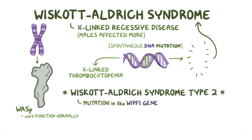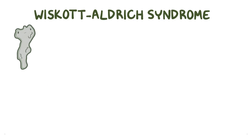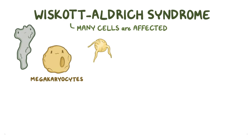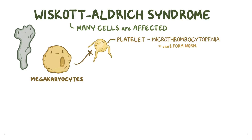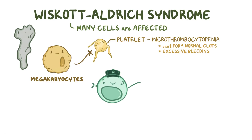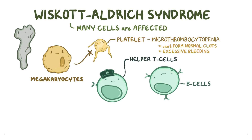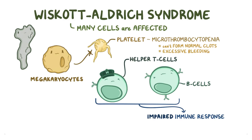Since the Wiscott-Aldrich protein affects the cytoskeleton of hematopoietic cells, many cells are affected when a mutation occurs. Megakaryocytes are less able to form platelets, and the platelets that are made are small and fragile, so it's called microthrombocytopenia. As a result, individuals can't form normal clots and can have excessive bleeding. Helper T-cells and B-cells aren't able to form an immunological synapse, resulting in an impaired immune response. For unclear reasons, this leads to an increase in IgA and IgE antibodies, and normal or decreased levels of IgM and IgG antibodies.